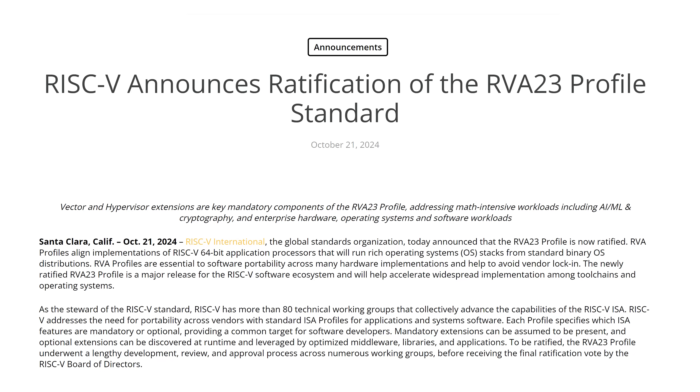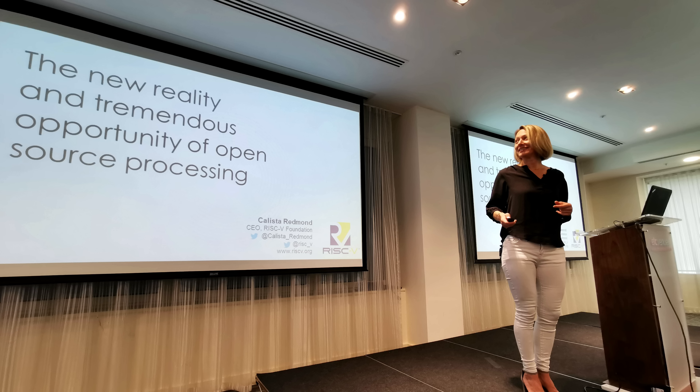Today, RISC-V International is announcing the RVA23 profile standard ratification. That means they now have a generalized profile aimed at more performant applications. This provides that base that we've been waiting for. I remember speaking to the CEO of RISC-V International, Calista Redmond, about this a couple of years ago. It was clear she saw the need for it coming — it's just taken a while to get there. RISC-V International claims over 16,000 developers and 80-plus working groups, so getting them all to agree has been a difficult slog.